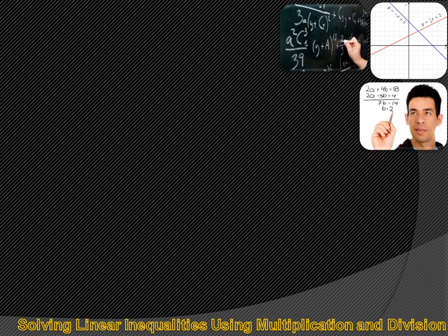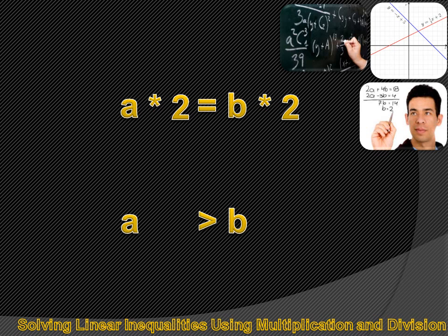It's a little trickier with multiplication. If A equals B, you can multiply both sides by 2 and 2A will equal 2B. It's also true that if A is greater than B and you multiply both sides of the inequality by 2, then 2A will be greater than 2B.